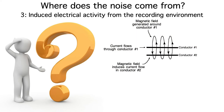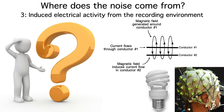The third source of noise in EEG recordings is induced electrical activity from the recording environment. When a current flows through a conductor, it's accompanied by a magnetic field. If that magnetic field then passes through another conductor, it induces the flow of electric current in that second conductor. As a result, AC electrical current flowing back and forth through a light bulb at 60 Hz will create a 60 Hz magnetic field oscillation, which then induces a 60 Hz voltage oscillation in our EEG electrodes. Or it may be 50 Hz depending on what country you're in.